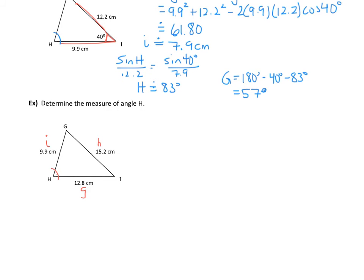Setting up the cosine law with angle H: side H comes first, so H squared equals G squared plus I squared minus 2GI times the cosine of angle H.